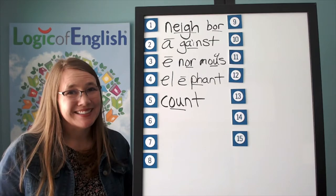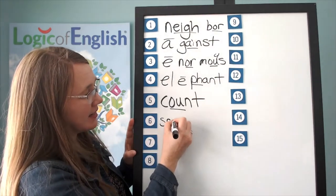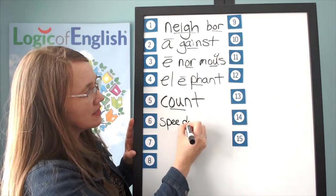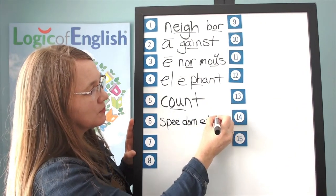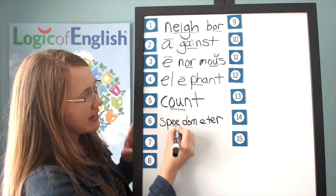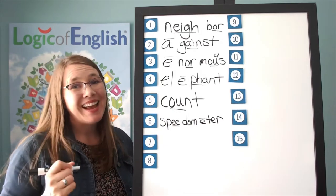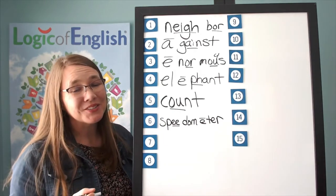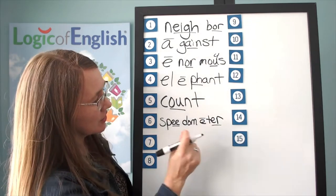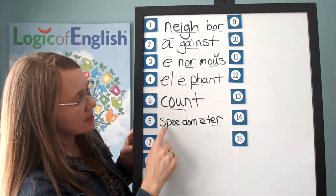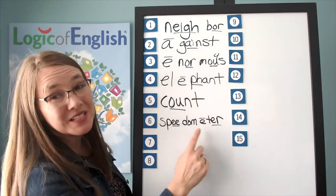Good writing it. Now help me to write it: spee — S, P, E; dom — D, ah, M; e; tur. How do we mark it? We'll underline the EE and put a line over the E. A-E-O-U usually say their long sounds at the end of the syllable. And we'll underline the ur. S-P-E-D-ah-M-E-T-ur. Speedometer.